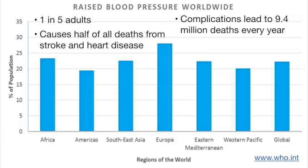High blood pressure arises in more than one in five adults worldwide. Approximately a quarter of the world population experiences hypertension. High blood pressure is the root of half of all deaths from strokes and heart disease. Complications from hypertension lead to 9.4 million deaths worldwide every year. In high-income countries, there has been a significant drop of people with hypertension due to diagnosis and treatment with low-cost medicines. In contrast, low-income countries have the highest prevalence of raised blood pressure, as seen in the Southeast Asian and African regions. Many people in these countries are not aware of the disease and do not have access to treatment. Hypertension can be said to be the root of numerous causes and complications involving the heart.